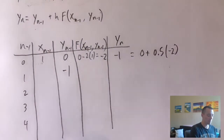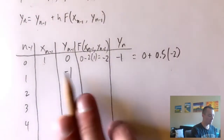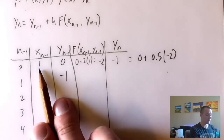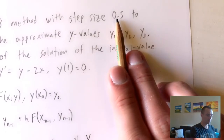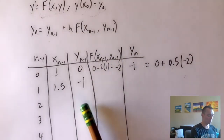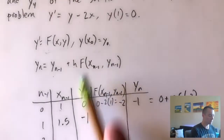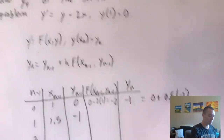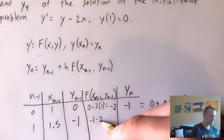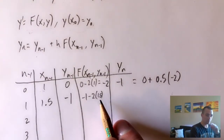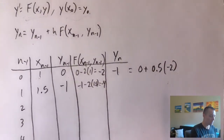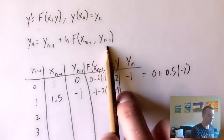The next x value is the previous x plus the step size: 1 + 0.5 = 1.5. Then we plug x = 1.5 and y = −1 into f(x, y) = y − 2x: −1 − 2(1.5) = −1 − 3 = −4.